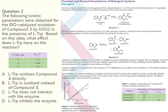The next question reads: 'The following kinetic parameters were obtained for the IDO-catalyzed oxidation of compound 3 by H₂O₂ in the presence of LTRP. Based on this data, what effect does LTRP have on the reaction?' The correct answer is D. This question requires combining knowledge of enzyme kinetics with interpretation of data. The test taker must understand that decreasing values of Kcat in the presence of higher concentrations of LTRP mean the enzyme produces less product, and combining this with knowledge of enzyme kinetics leads to the conclusion that LTRP is inhibiting the reaction.